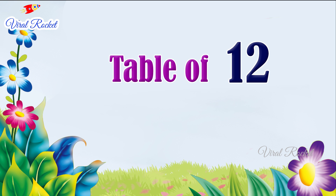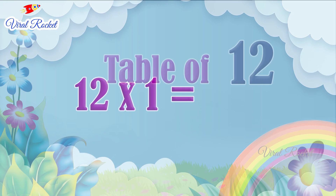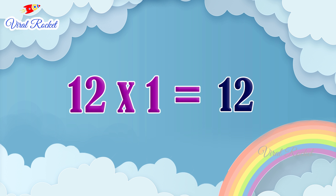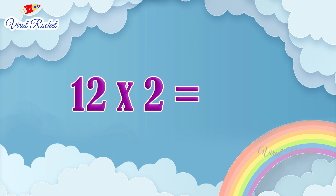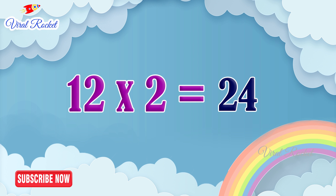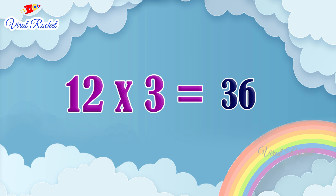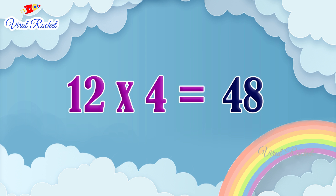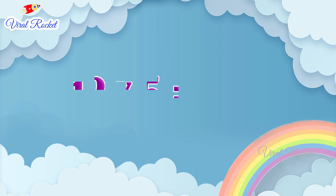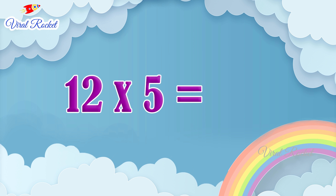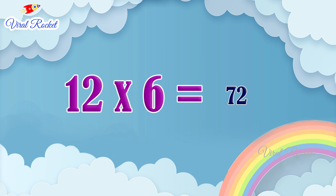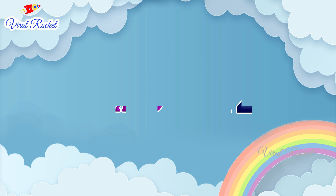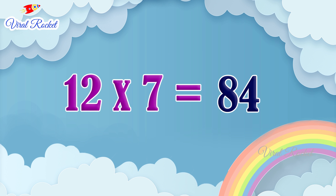Table of 12. 12 1s are 12. 12 2s are 24. 12 3s are 36. 12 4s are 48. 12 5s are 60. 12 6s are 72. 12 7s are 84.